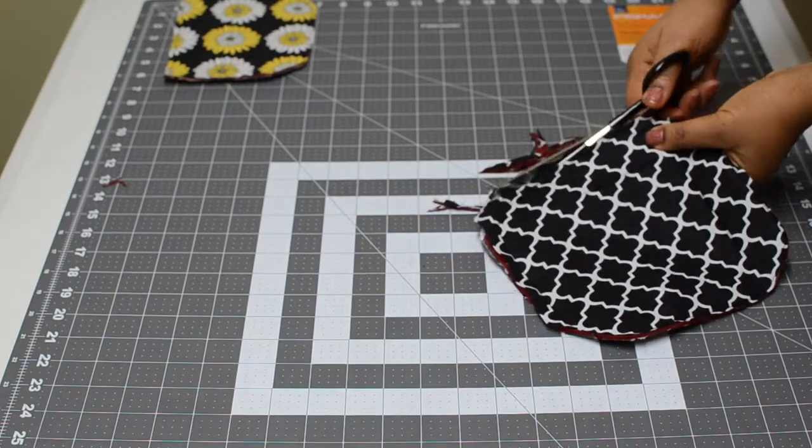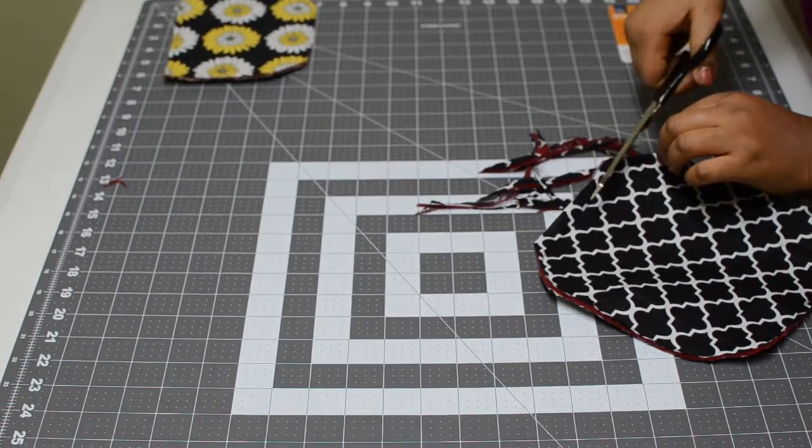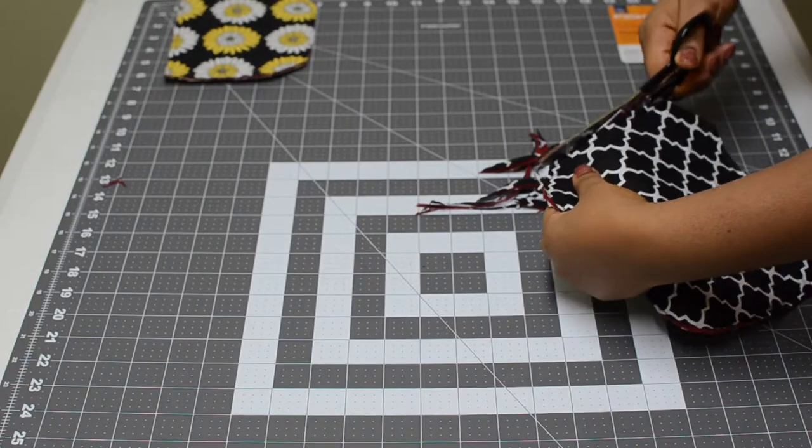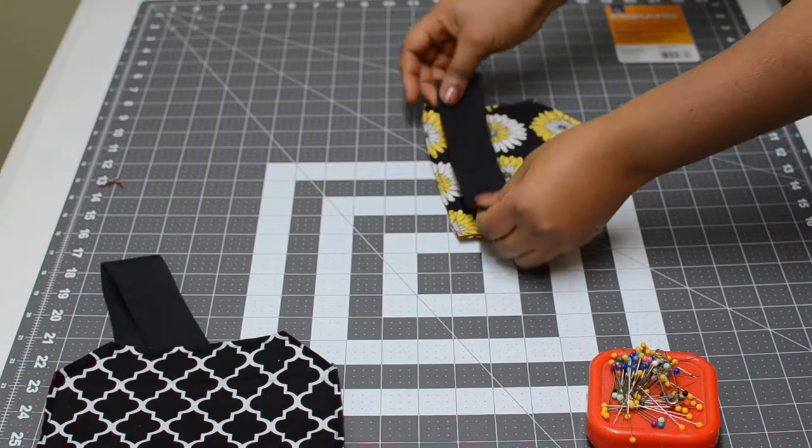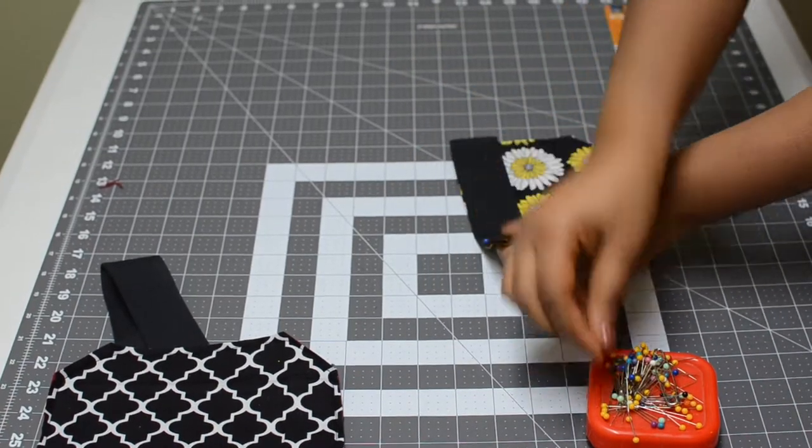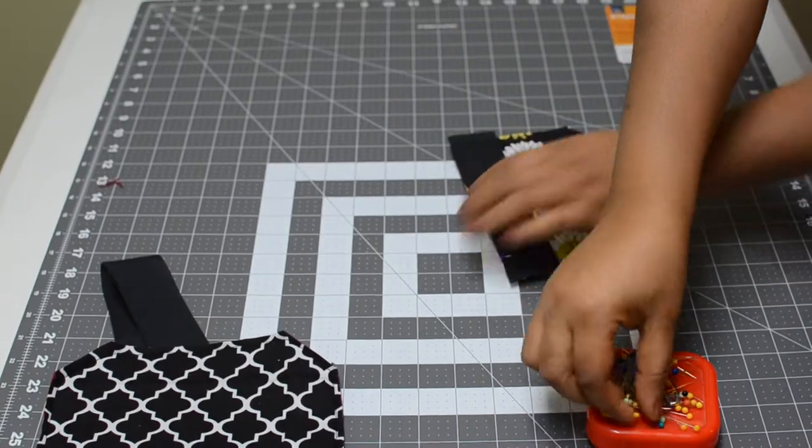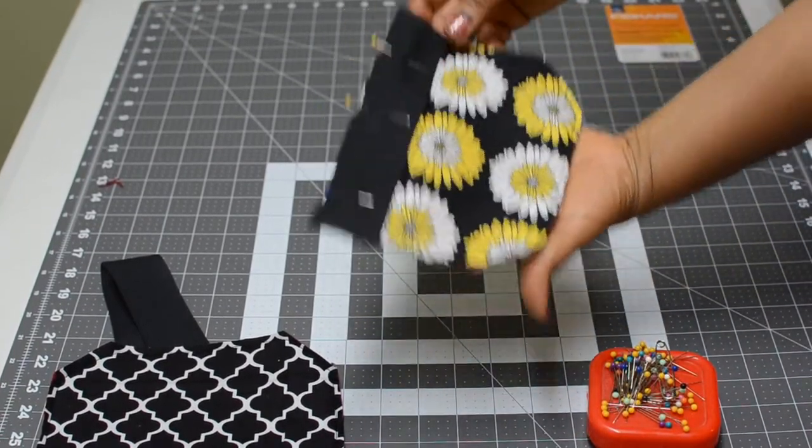When done cutting, bring out the contrast fabric with the shorter layer. Bring out the bias tape and iron it flat, pin it together with the fabric, and take it to the machine and sew.